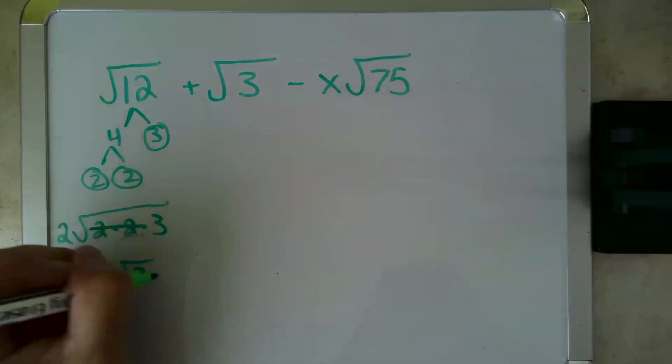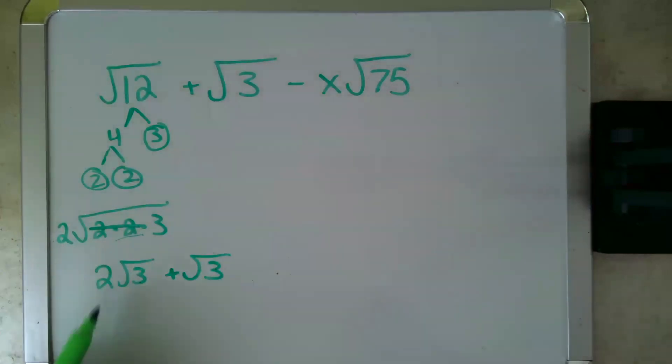Now I have plus root 3, and as we said before, cow math, 2 cows plus 1 cow, that'll be 3 cows or 3 root 3s.